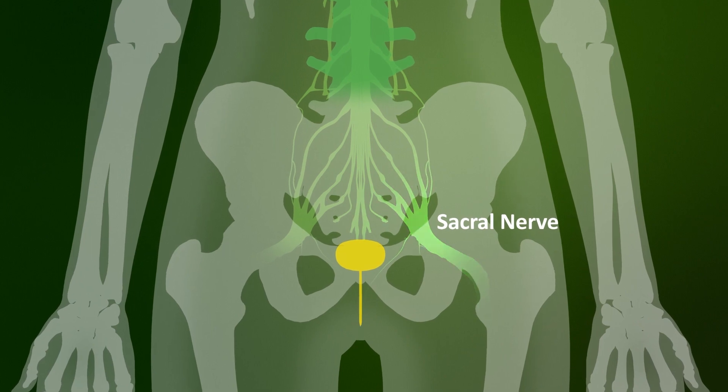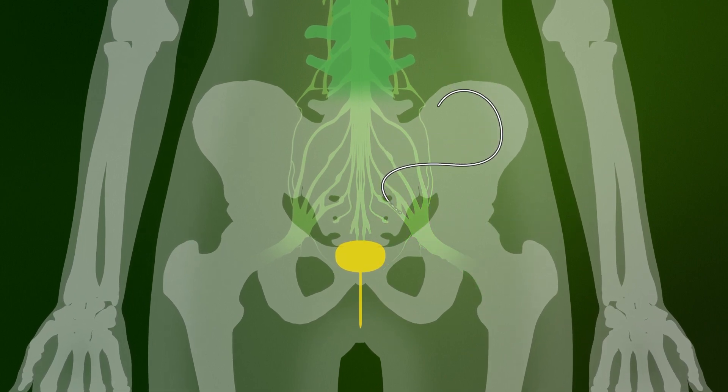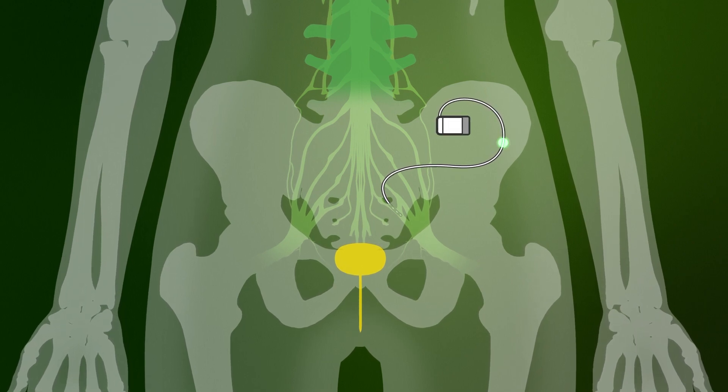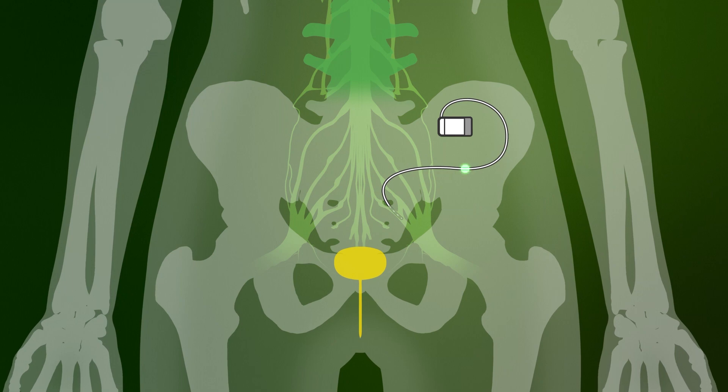For SNM therapy, a lead wire is placed near your sacral nerve and connected to a small stimulator through a minimally invasive procedure. Gentle pulses are delivered to activate the sacral nerve.